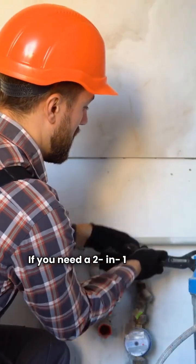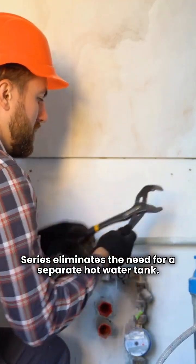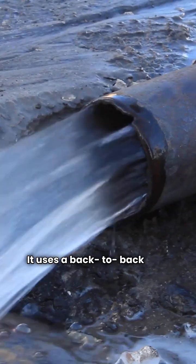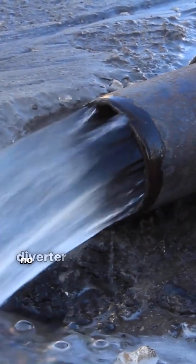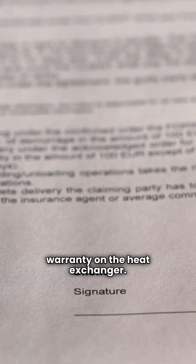If you need a two-in-one system, their DC Combi Series eliminates the need for a separate hot water tank. It uses a back-to-back heat exchanger, which means no diverter valve to break down later. I like that. Plus, they offer a limited lifetime warranty on the heat exchanger.